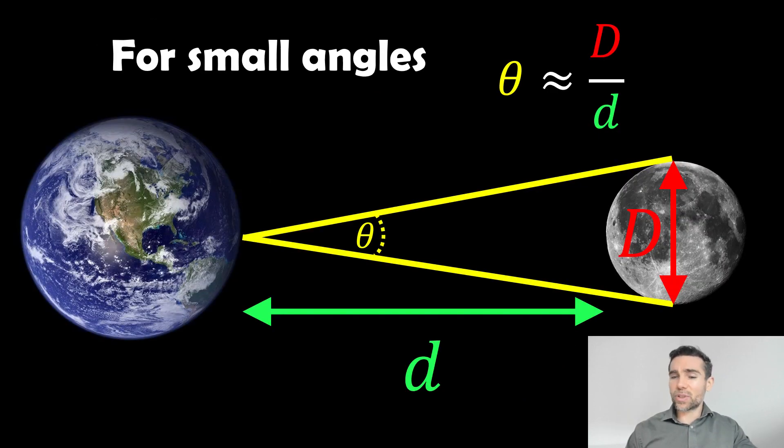For small angles, we can use this equation where theta, which is your angular diameter, is approximately equal to the diameter of the moon divided by the distance. We can rearrange that for distance and then calculate the actual diameter of the moon. You can also apply exactly the same method to the sun or other objects as well.